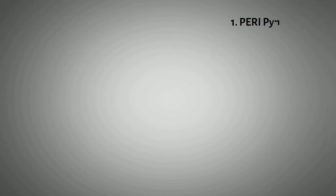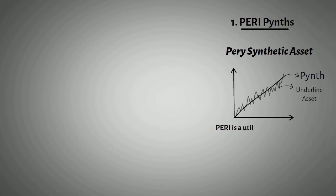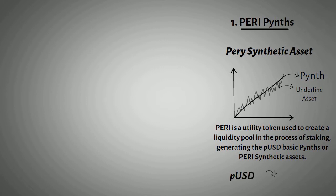First is the Puri PINTHs. PINTH stands for Puri Synthetic Asset — it is a synthetic asset whose price follows the price of the underlying asset. Puri is a utility token used to create a liquidity pool in the process of staking, generating the PUSD basic PINTHs or Puri synthetic assets. PUSD is used when converting into other PINTHs of the user's choice.